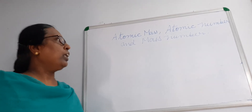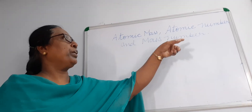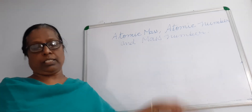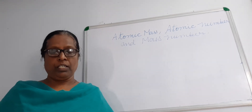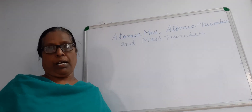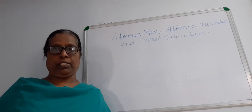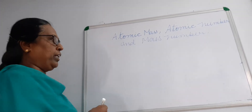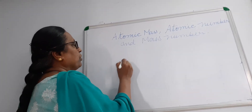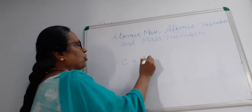Today let us learn atomic mass, atomic number, and mass numbers. What is atomic mass? It is the mass of any element. For example, the mass of carbon is equal to 12.